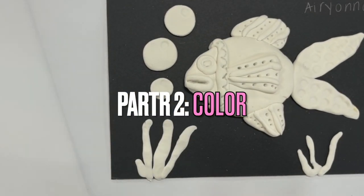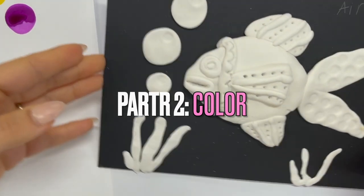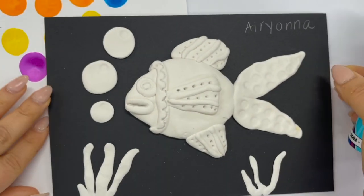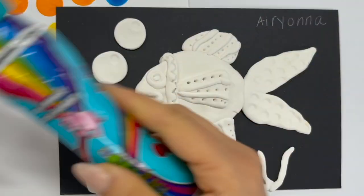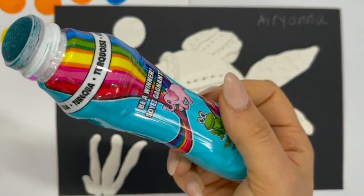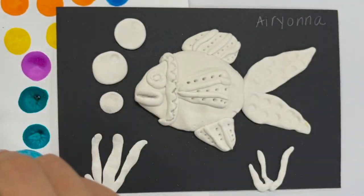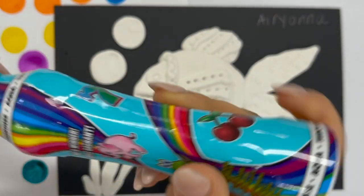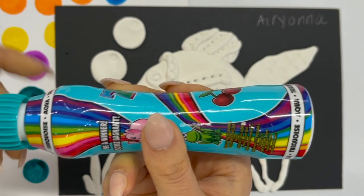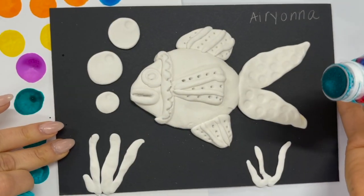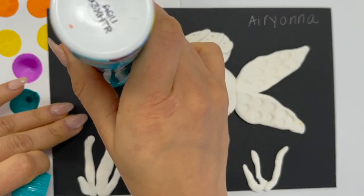Remove the lid and give the dauber a little shake. To paint we are just going to lightly dot the surface of the model magic with a padding motion. Make sure you close the bingo dauber when you are done with each color so they don't get dry and crusty. No one wants to use a crusty dauber.